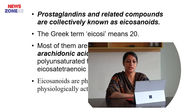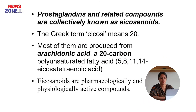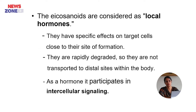Prostaglandins and related compounds are collectively known as Eicosanoids. The Greek term 'eikosi' means 20. Most of them are produced from arachidonic acid, a 20-carbon polyunsaturated fatty acid. Eicosanoids are pharmacologically and physiologically active compounds. They are considered local hormones because they have specific effects on target cells close to their site of formation. They are rapidly degraded, so they are not transported to distal sites within the body. As hormones, they participate in intracellular signaling.